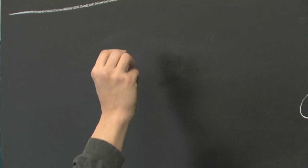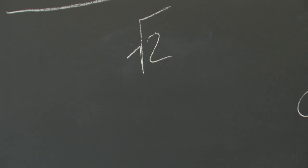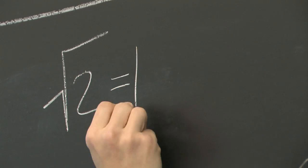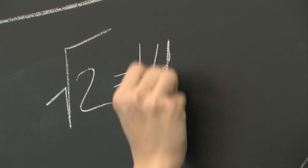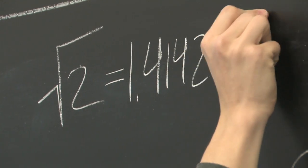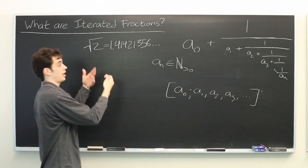But, suppose you take some irrational number, like the square root of 2. If you were to express this in a traditional decimal notation, you get approximately 1.41421356 dot, dot, dot. Because, that's all I've memorized.